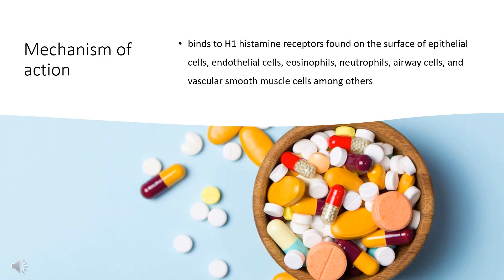Mechanism of Action: Levocabastine is a potent, selective histamine H1 receptor antagonist. It works by competing with histamine for H1 receptor sites on effector cells. It thereby prevents, but does not reverse, responses mediated by histamine alone. Levocabastine does not block histamine release, but rather prevents histamine binding and activity.